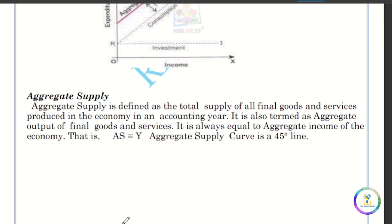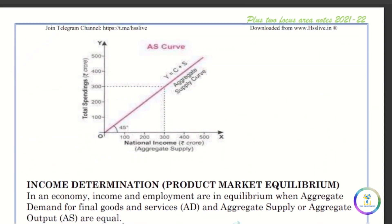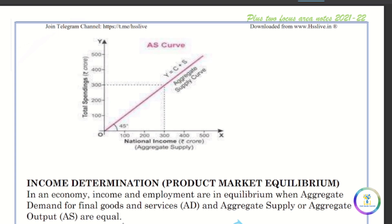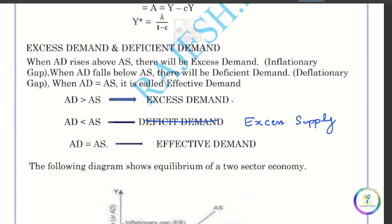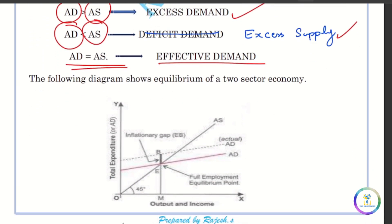If you look at aggregate supply, you need to learn the 45-degree line graph. The aggregate demand will be equal to the aggregate supply at equilibrium. This is a demand curve intersecting the 45-degree supply curve — that point is the equilibrium.